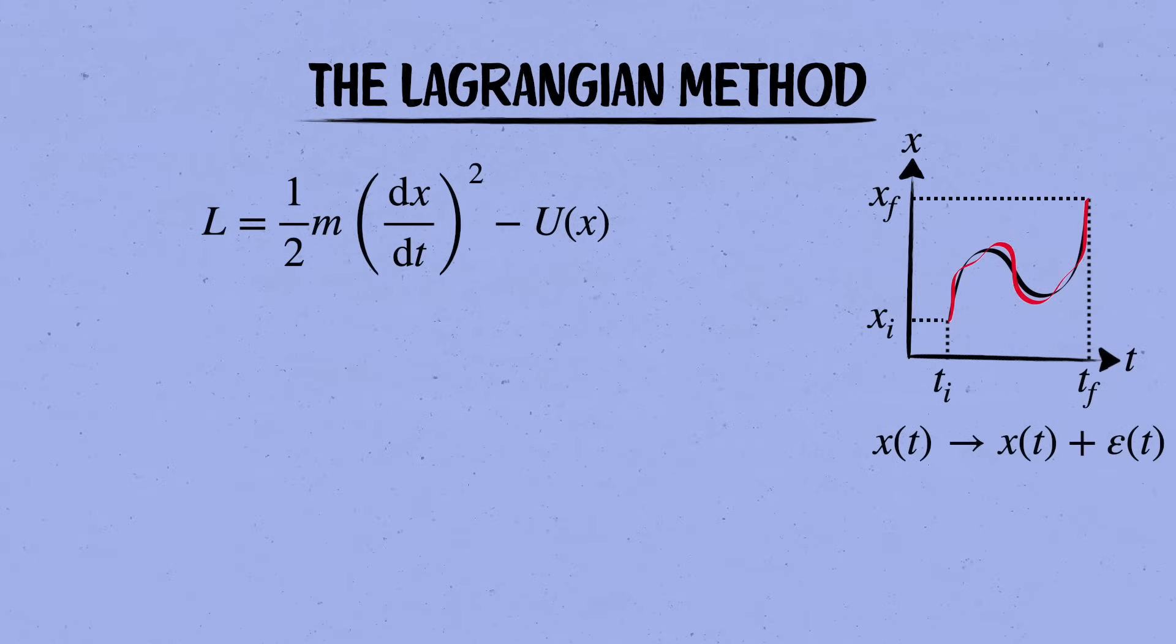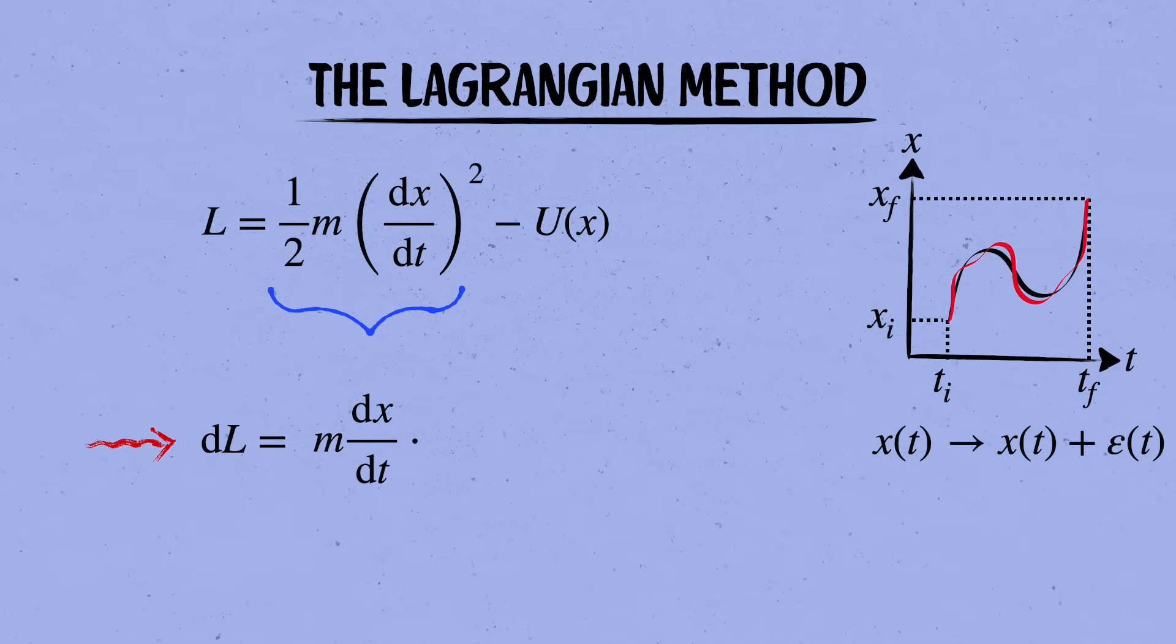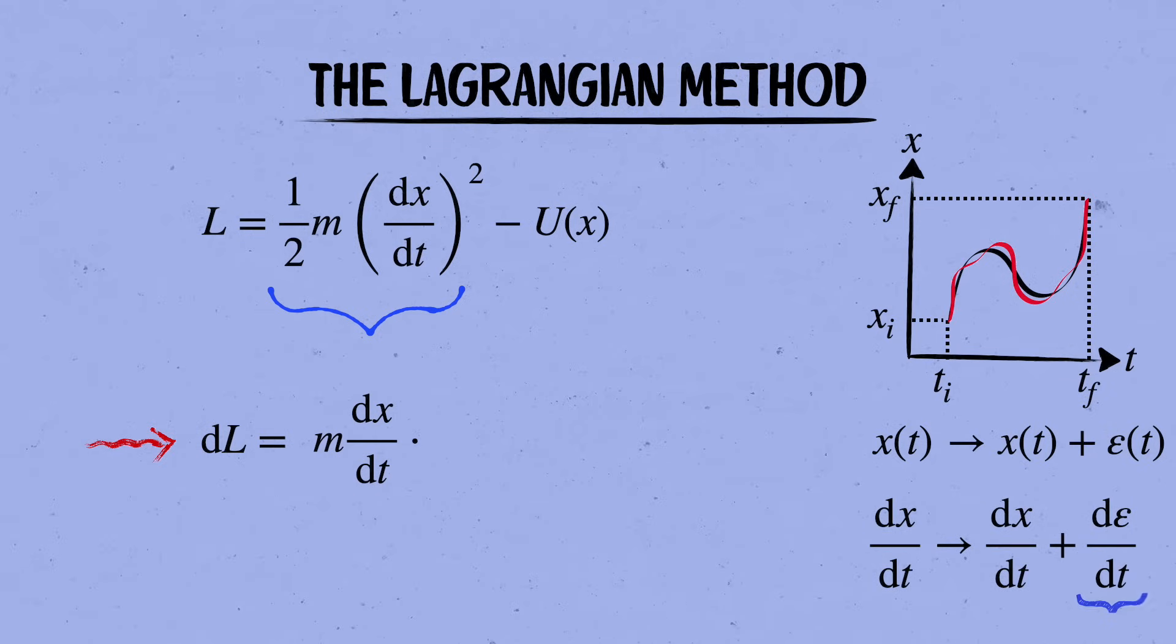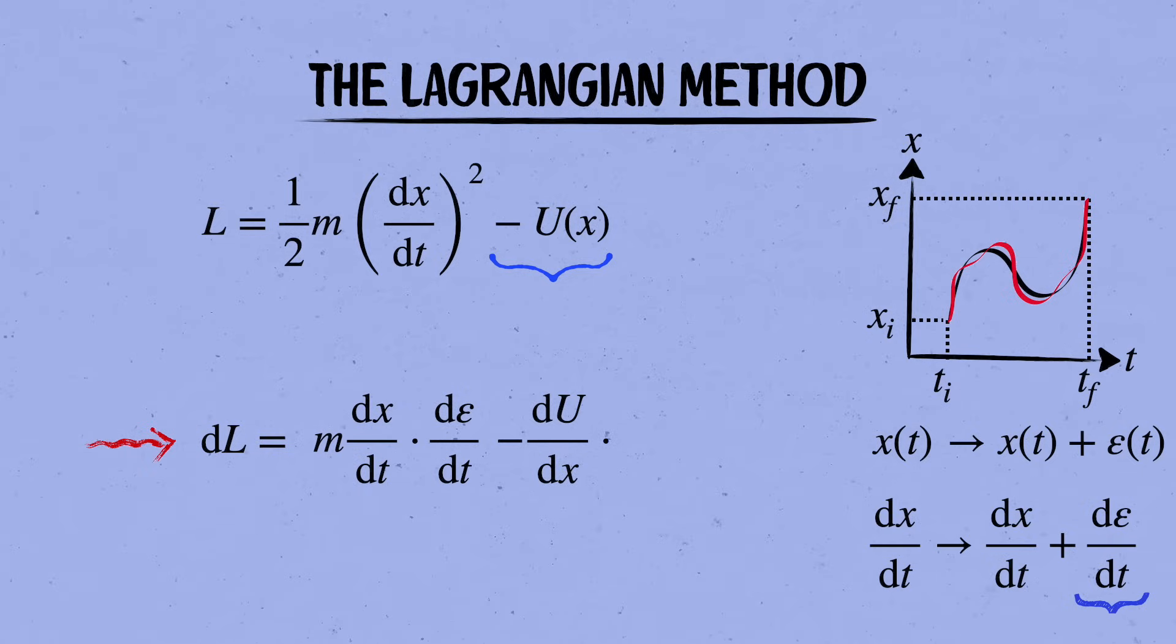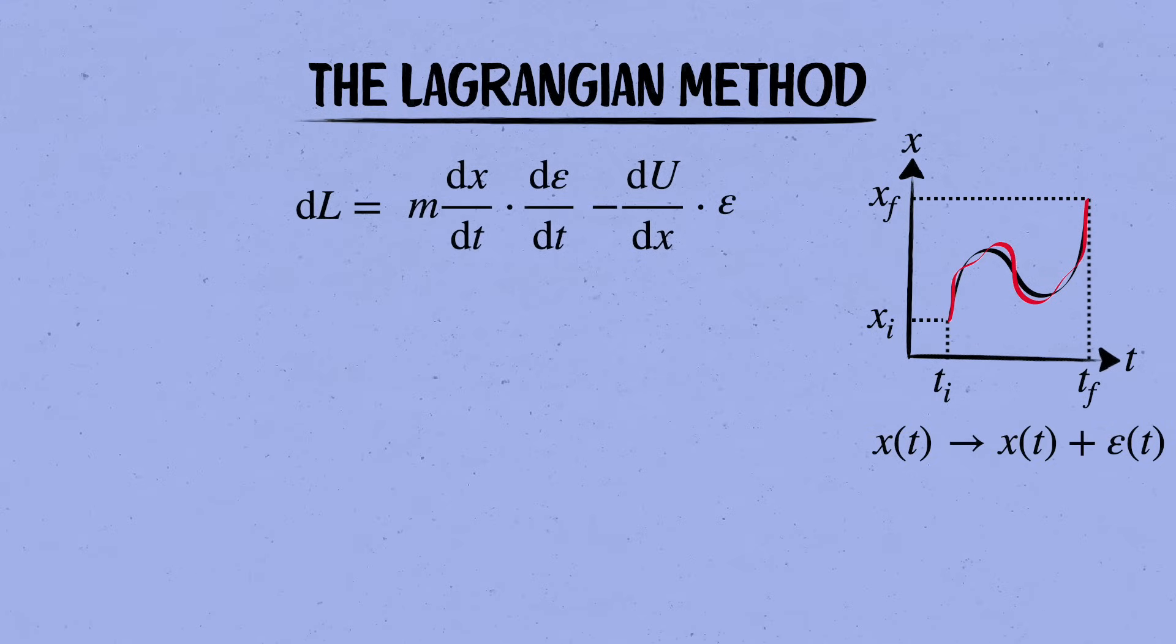First, let's figure out how the Lagrangian changes. Again, it's just like taking the differential of a function, except that now the Lagrangian is a function of both x and dx by dt. From the kinetic energy term, we take the derivative and get m times dx by dt. And then we multiply that by the change in dx by dt, which is d epsilon by dt. And for the potential term, we take its derivative and get minus du by dx times the change in x, which is epsilon. So that's how the Lagrangian changes when we make a tiny variation of the path.